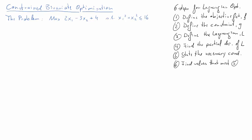There could be several solutions, and we'll see what we do if there are several. So let's start with step one: we write down our objective function, f(x₁, x₂) = 2x₁ minus 3x₂ plus 4. You will recognize that this is linear in x₁ and x₂, so this is actually a plane, meaning there is no unconstrained maximum for f.